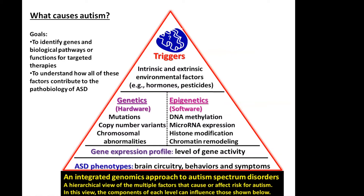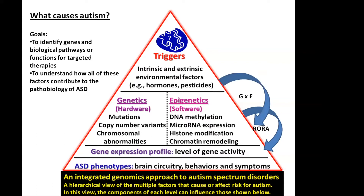Overall, the goals of my lab are to identify genes and biological pathways or functions for targeted therapies, and to understand how all of these factors together contribute to the pathobiology of autism. Today, I'm going to summarize studies where we overlapped DNA methylation with gene expression profiles, and among the genes found to be dysregulated by DNA methylation was a gene called RORA. Looking further at the regulation of RORA, we found that sex hormones — both male and female — have opposite effects on RORA expression in neuronal cells: male hormones suppress it, while female hormones increase its level of expression.